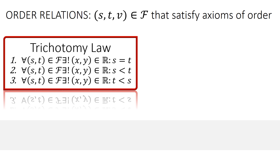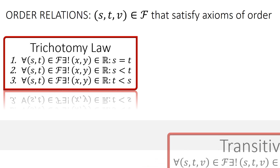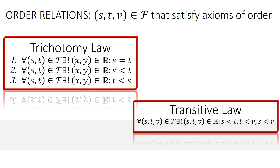An order relation is a set of ordered elements of a set F that satisfy axioms of order. One of these axioms is the trichotomy law: for any s, t that is an element of F, exactly one of the following holds — that s equals t, that s is less than t, or that t is less than s. The other axiom is the transitive law: if s is less than t and t is less than v, then s is less than v.